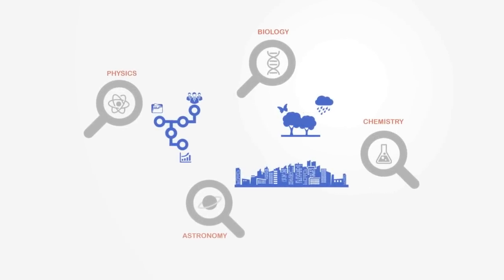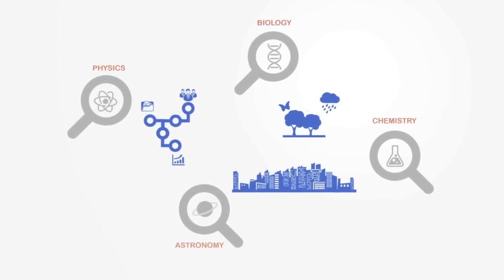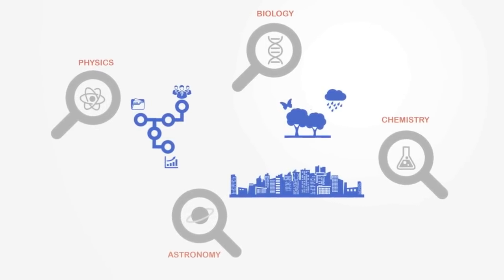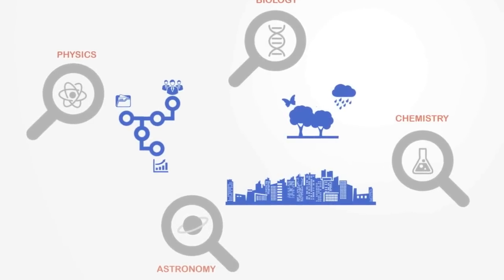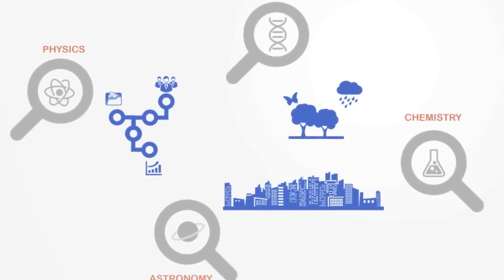Complexity science studies the complex systems in our world that have previously fallen between the gaps of modern science, such as financial networks, cities, ecosystems and social networks.